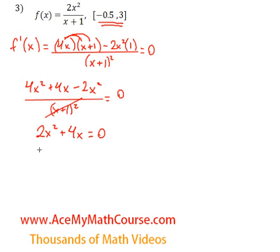And right now, I can factor out a 2x. 2x squared divided by 2x is x. And 4x divided by 2x is just 2. And that's equal to 0. So, x is either 0 or negative 2. But we're only interested in values between negative half and 3. So, we're not going to go for the negative 2 right now.